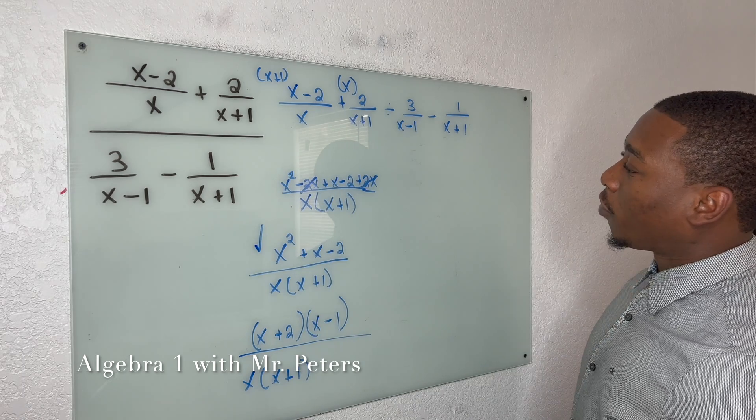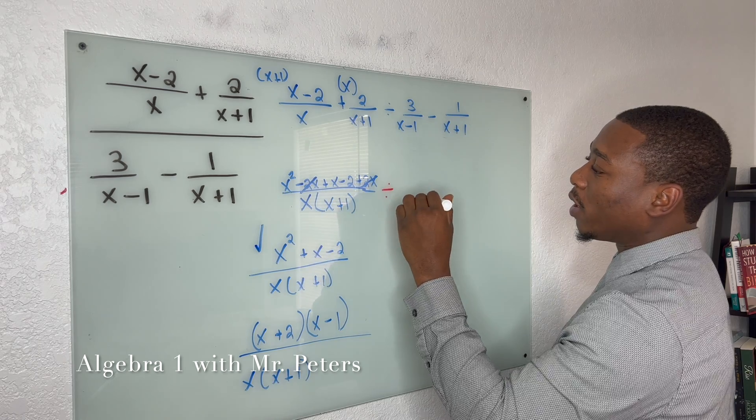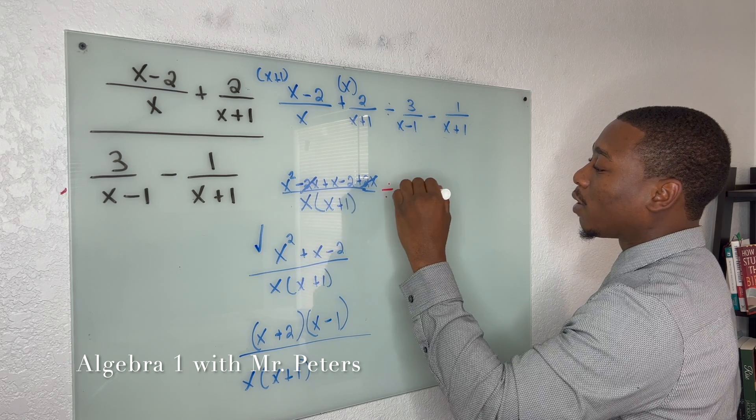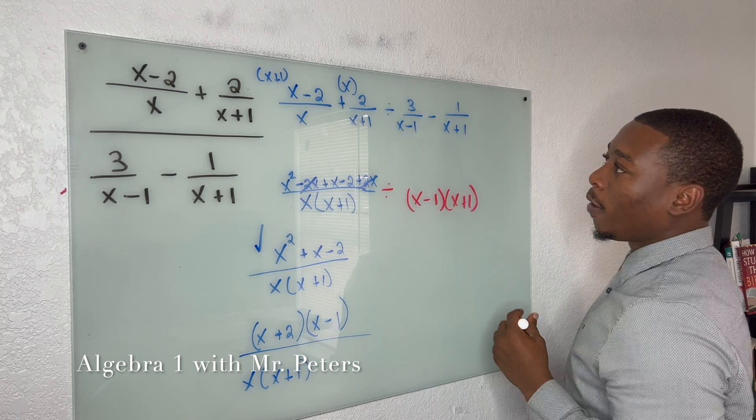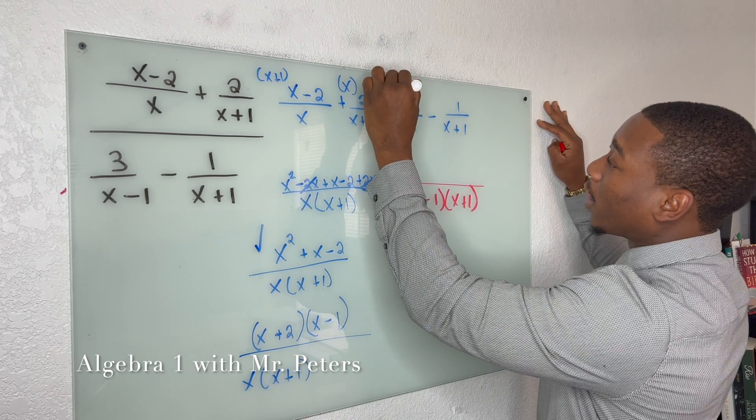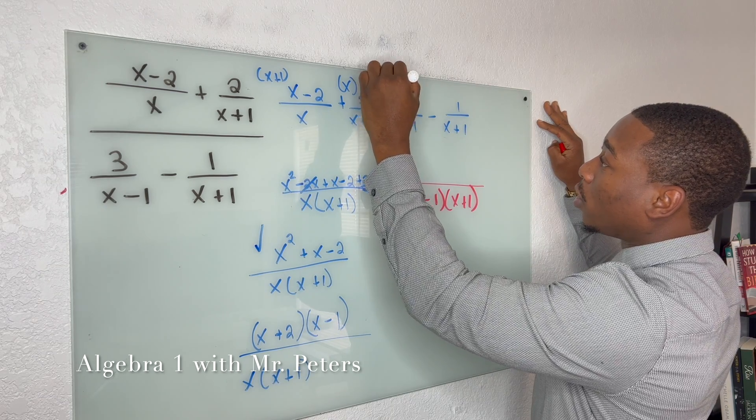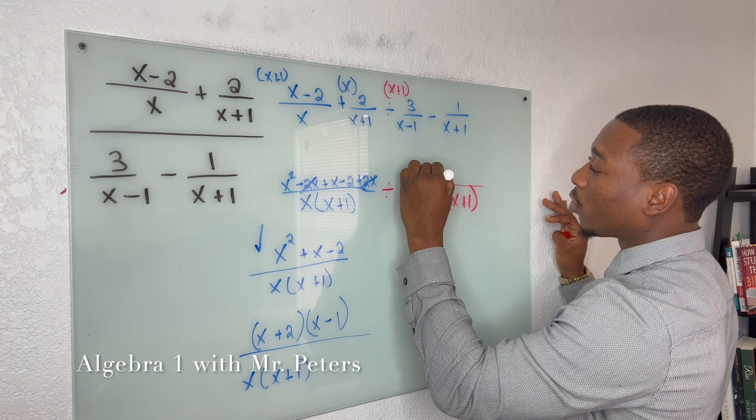So on the second half of the problem, our common denominator is going to be x minus 1 times x plus 1. And when we look at this first fraction, we're going to multiply 3 times x plus 1. So once we do that, we'll get 3x plus 3.